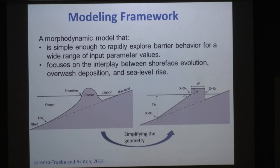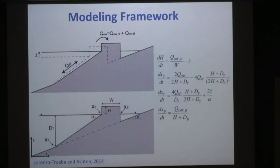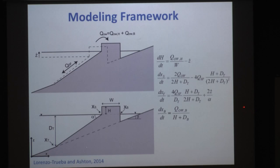If we are able to write the rate of change of these variables in terms of the leading processes — which in this cross-shore setting are sea level rise rate (ż), sediment transport at the surface directed either offshore or onshore, and overwash fluxes — then we can describe how the barrier is going to respond.